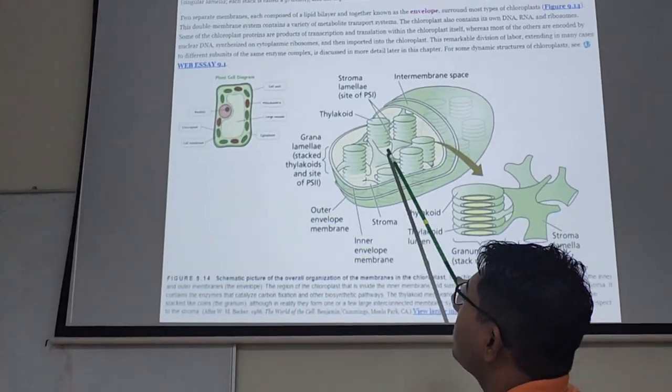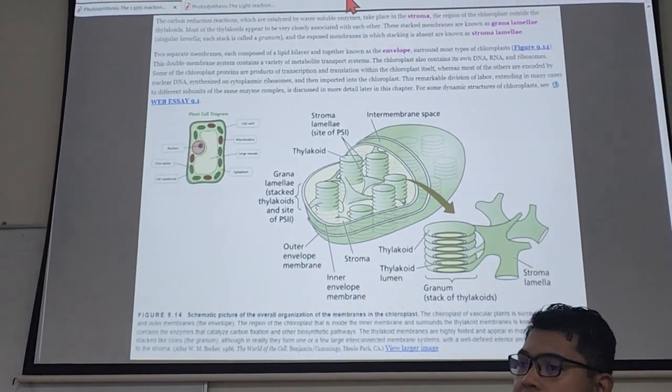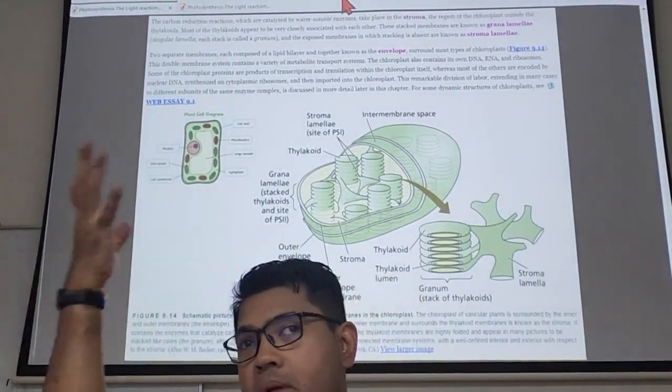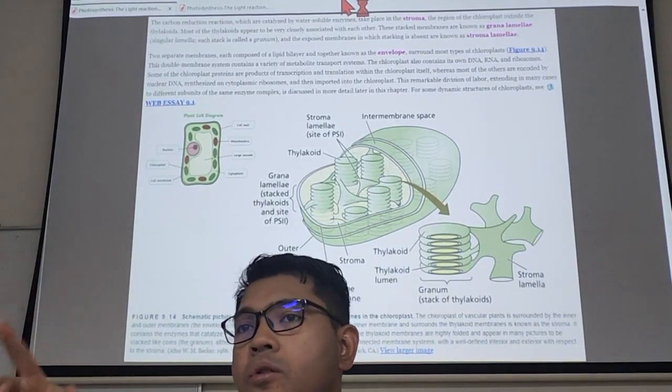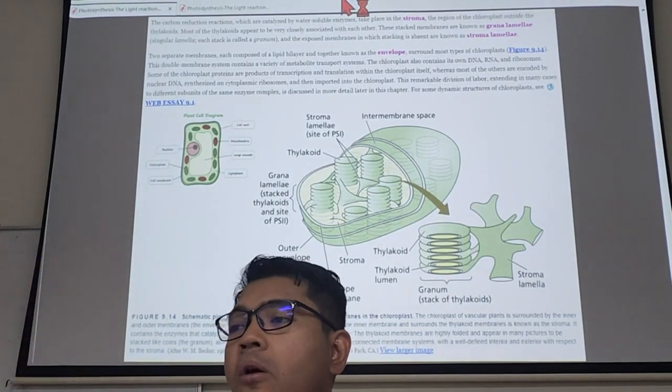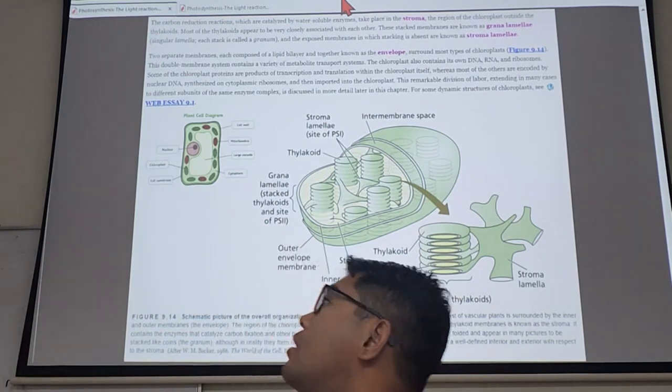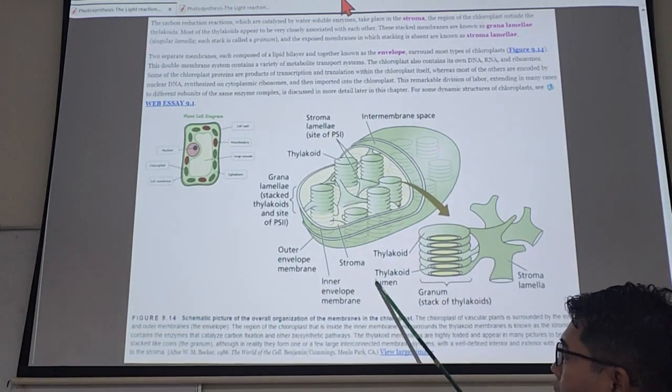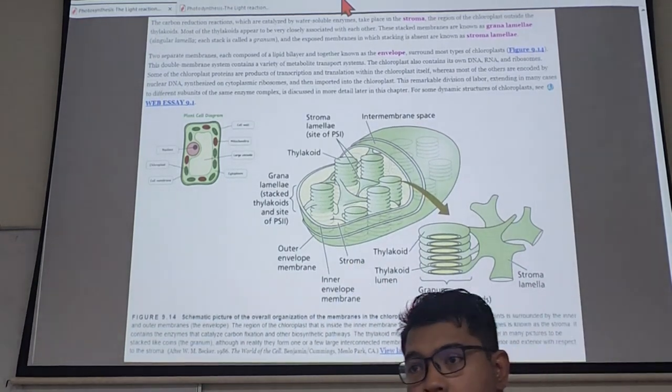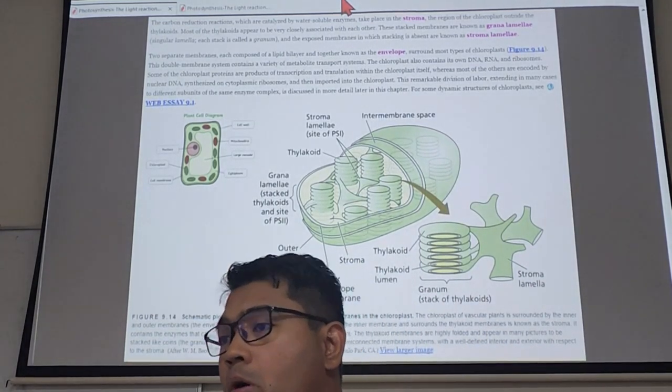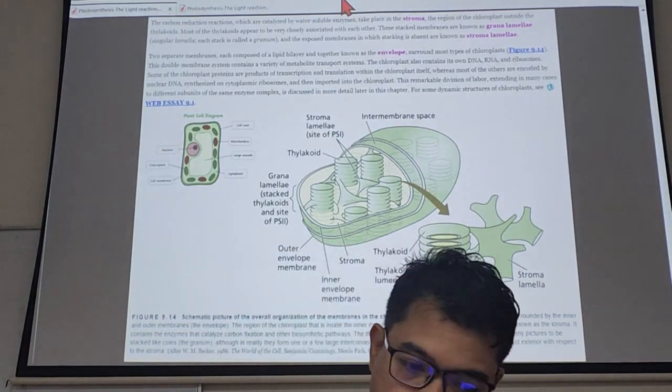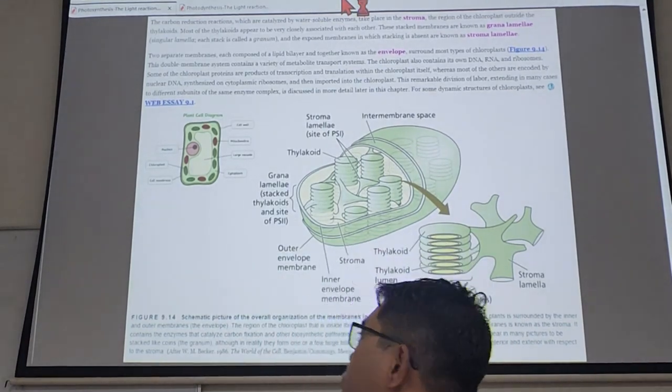So what other thing is important? The stroma. What is the stroma? The stroma is the environment inside the chloroplast, the soup inside the chloroplast. If the soup in the cell we call cytoplasm, the soup in the chloroplast we call stroma. Not stoma - stomata are the microscopic pores on the leaf surface. That's not it, this is stroma.